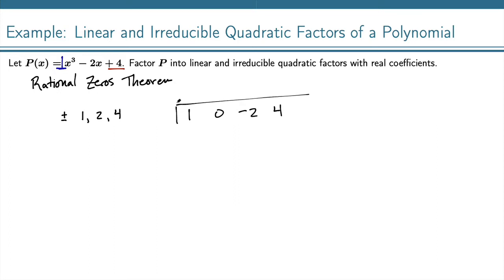And then on the outside we'll test 1 first. We start by bringing this 1 down. 1 times 1 is 1, 0 plus 1 is 1, 1 times 1 is 1, and then we get 3. We didn't get a 0 there, so 1 does not work.